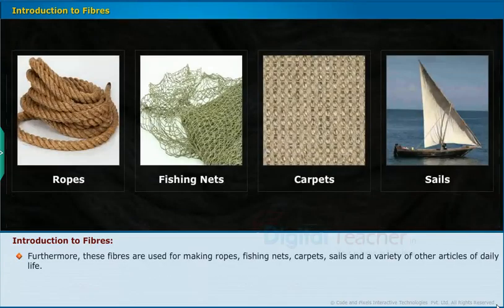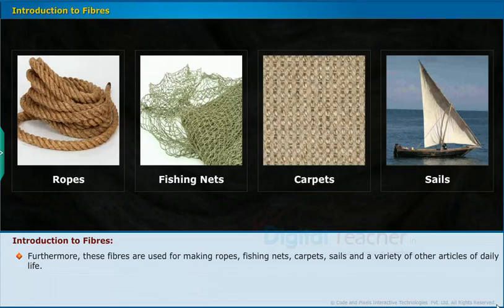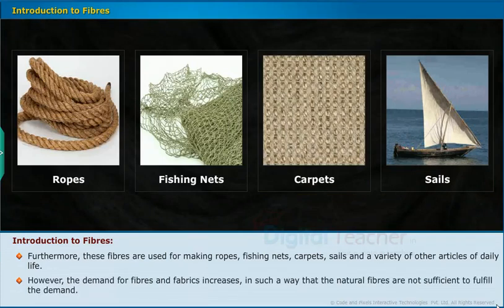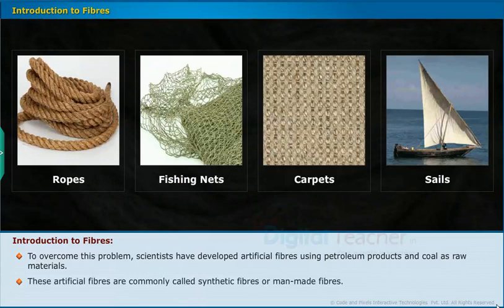Natural fibers also protect human beings from extreme temperature and climate change. Furthermore, these fibers are used for making ropes, fishing nets, carpets, sails and a variety of other articles of daily life. However, the demand for fibers and fabrics increased such that natural fibers are not sufficient to fulfill the demand. To overcome this problem, scientists developed artificial fibers using petroleum products and coal as raw materials. These artificial fibers are commonly called synthetic fibers or man-made fibers.